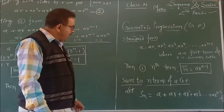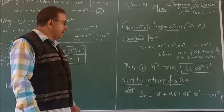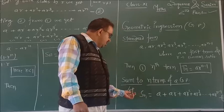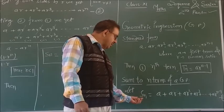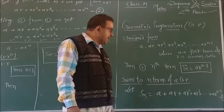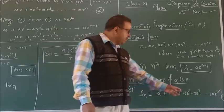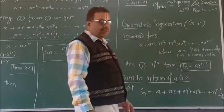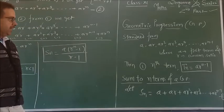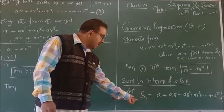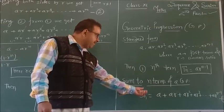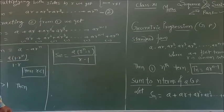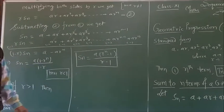We want to find the sum of n terms of GP. So, the sum to n terms: S_n = a + ar + ar² + ar³ + ... + ar^(n-1). This is the first equation. Here, r is not equal to 1.